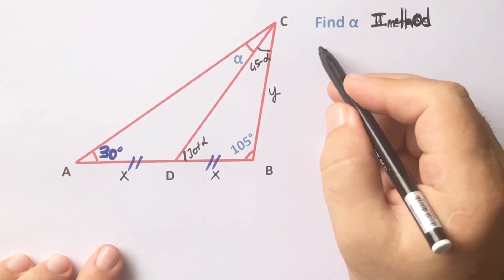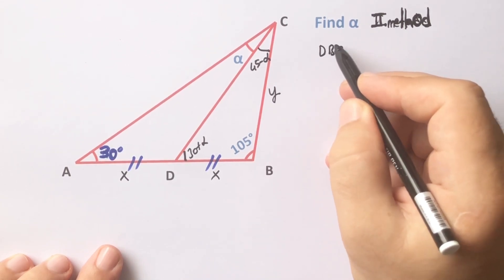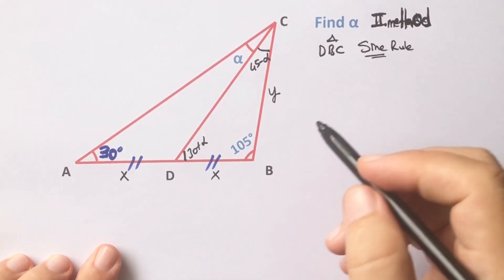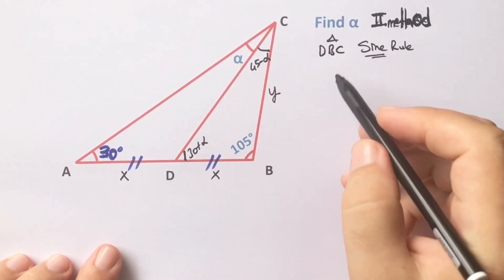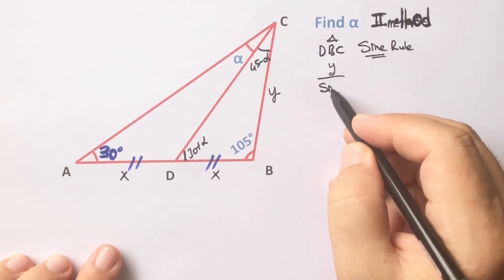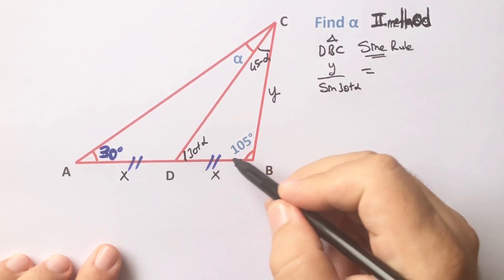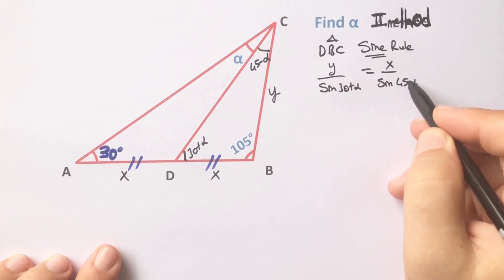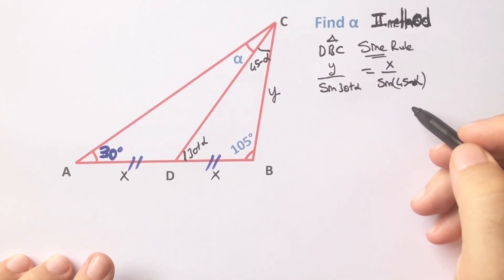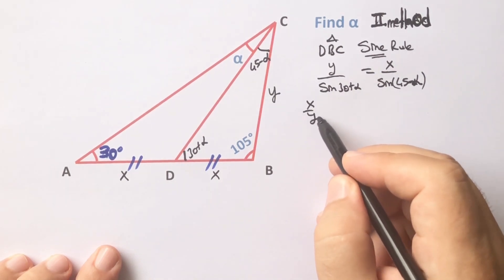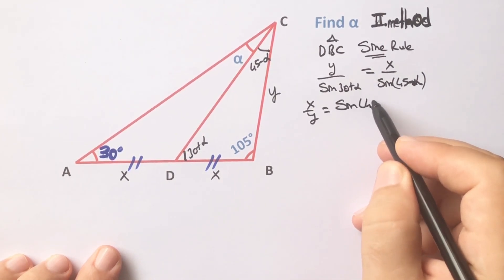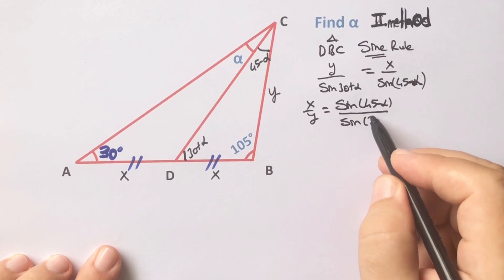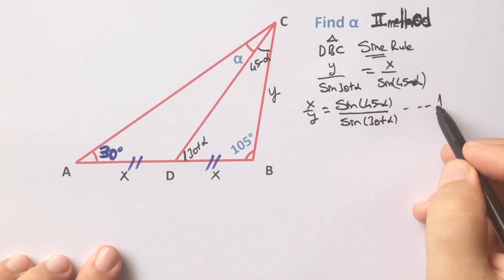Let's call this angle and apply the sine rule. According to the sine rule: y over sine(30 + alpha) equals x over sine(45 − alpha). Therefore, x over y equals sine(45 − alpha) over sine(30 + alpha). This is the first equation.